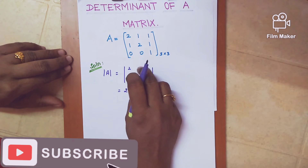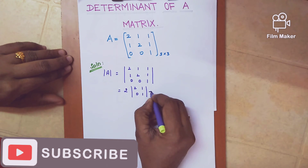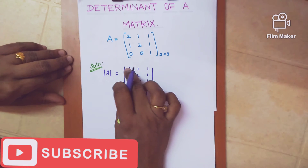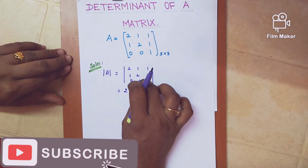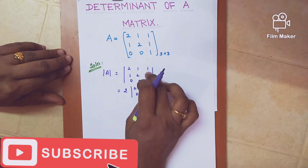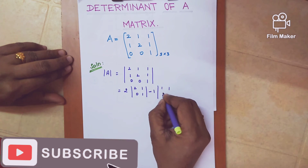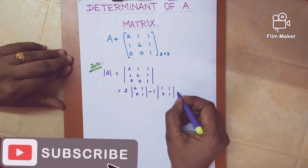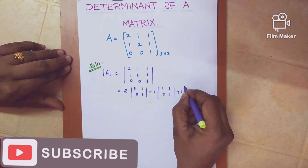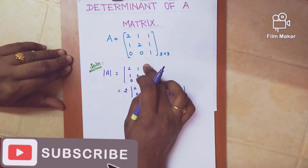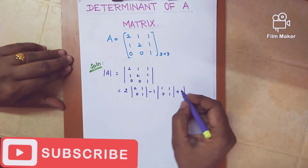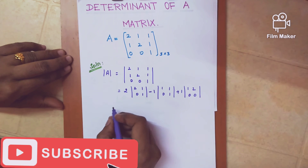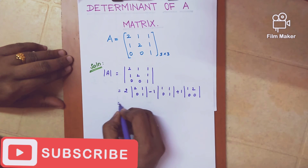The second element has a place sign of minus, so it is minus 1. We omit its corresponding row and column and take the remaining minor: [1,1; 0,1]. The third element has a place sign of plus, so it is plus 1. We omit its corresponding row and column and take the remaining minor: [1,2; 0,0]. This completes the first step of expansion.